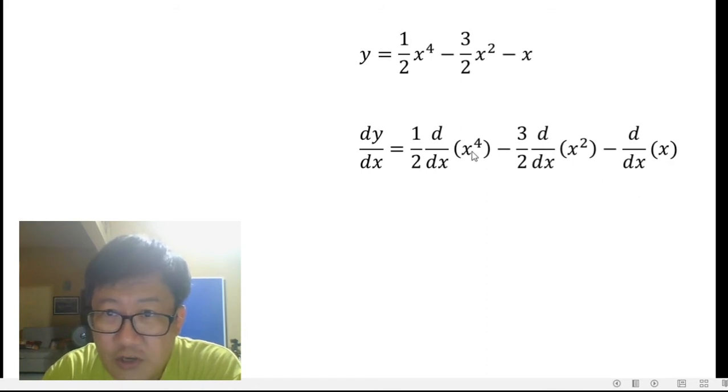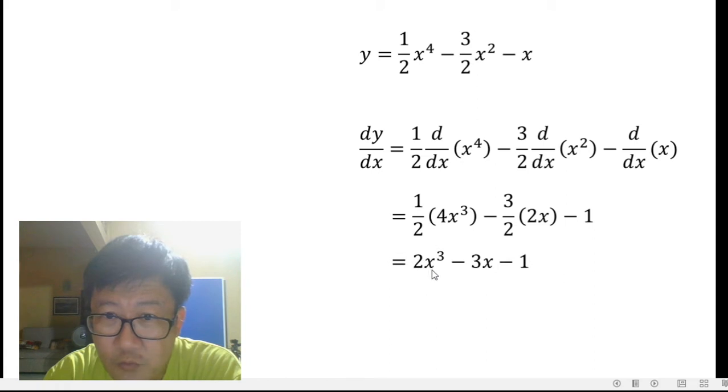Now when you differentiate x to the power of 4, you get 4x to the power of 3. Let's have it. When you differentiate x squared, you get 2x. When you differentiate x, you get a 1 here. So when you tidy this up, you get 2x cubed minus 3x minus 1.